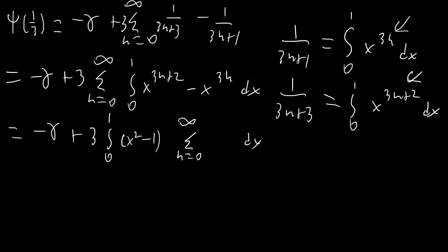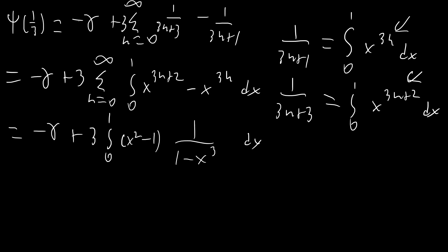We write x to the three n as x cubed to the n power. Since x is between zero and one, x cubed is also between zero and one, so we apply the geometric series formula and replace the sum with one over one minus x cubed. Then we rewrite everything as a rational function, and all of a sudden our digamma function has turned into an integral.